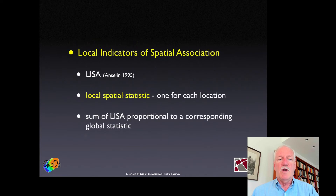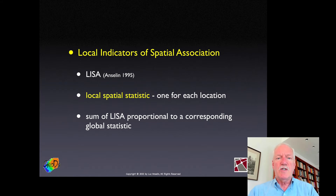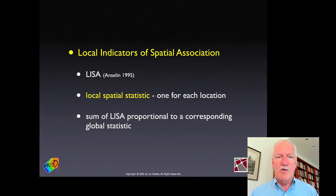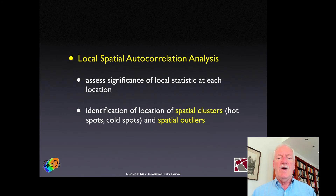This concept of a local indicator of spatial association, or LISA, that I proposed a number of years ago, means that there is a statistic for each location, and also that the sum of the LISAs is connected to a global statistic. The key thing is that we have a statistic for each point or each location, and we can assess its significance. That is the essence of the idea behind LISA.